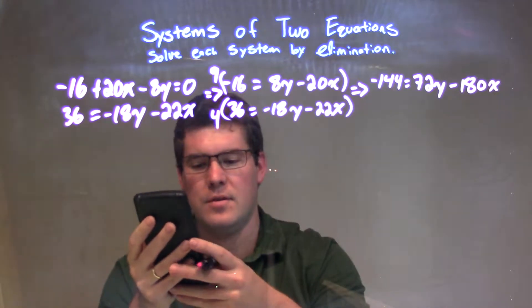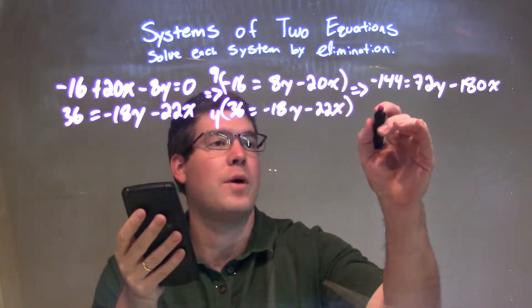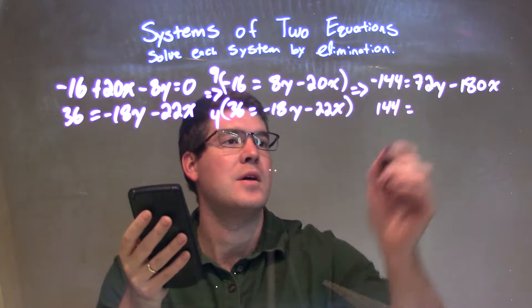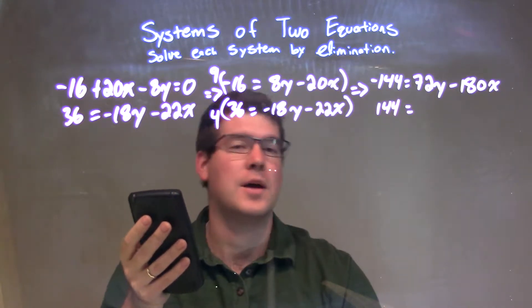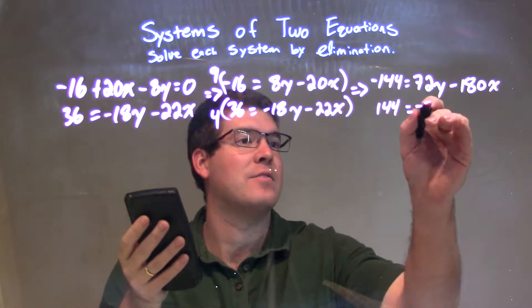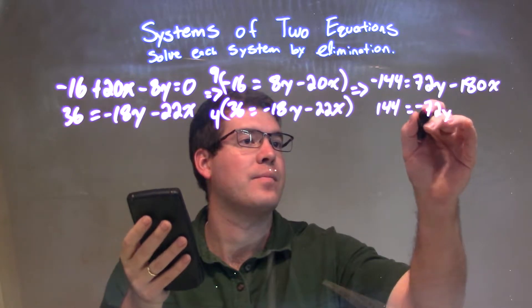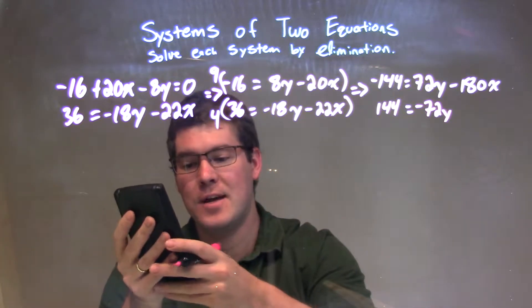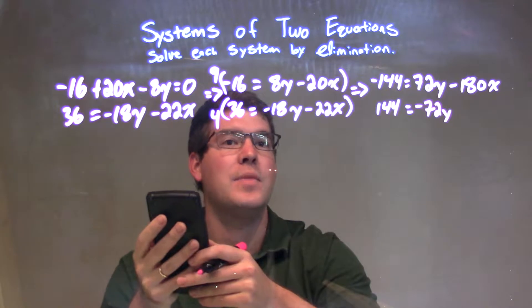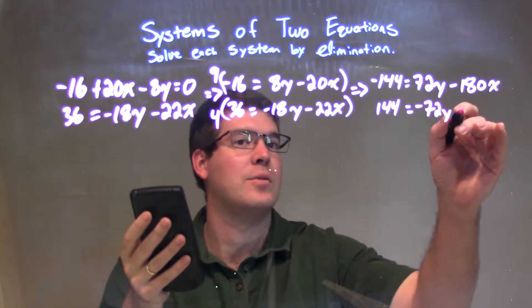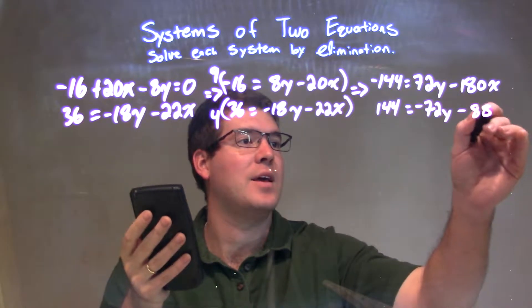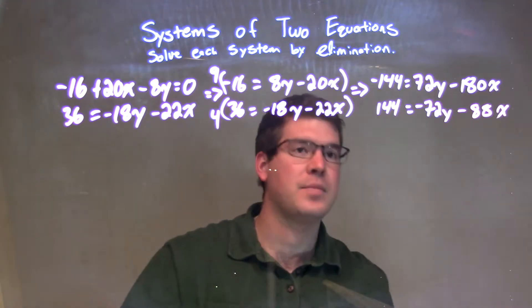Now, 4 times 36, I think that's 144. So, positive 144 here, and that's equal to 4 times negative 18y, which is negative 72y. Let's just double check that 4 times 18 is 72, great. And 4 times negative 22 is negative 88x.